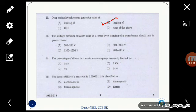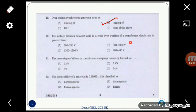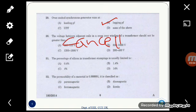Then the next question is: the voltage between adjacent coils in a crossover winding of a transformer should not be greater than? So this question is cancelled by the PSC in its final answer key.